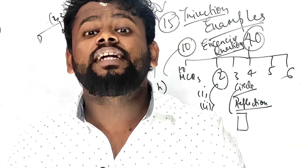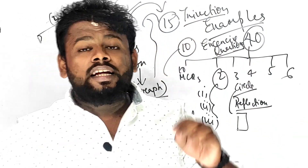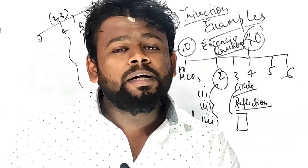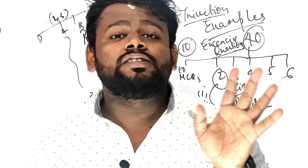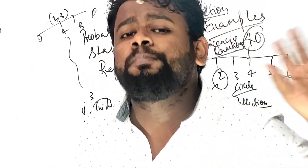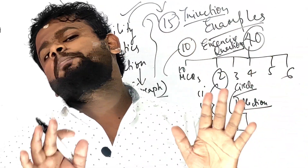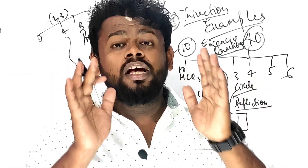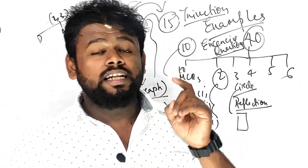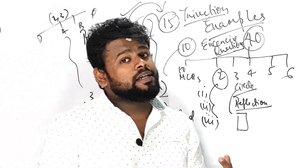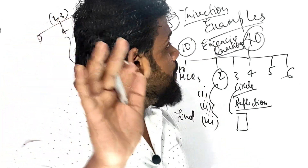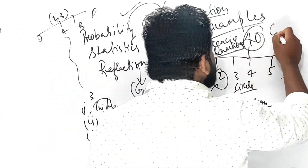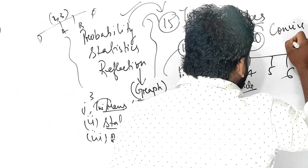Coming to Trigonometry — two marks are reserved for you. For example, sin 30° + cos 30° + sin 15° divided by sec 45° + cos 45° — a question like this will be there. Two marks are inside your pocket if not from MCQ, then at least one mark from MCQ. These types of questions will be very important, so you have to understand the trigonometry table very well.